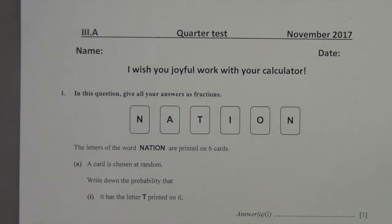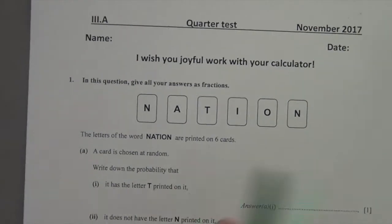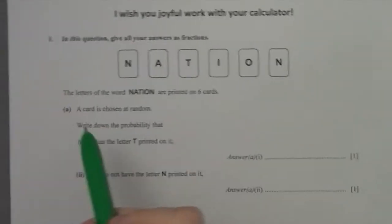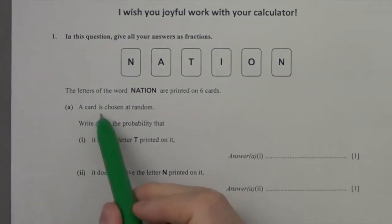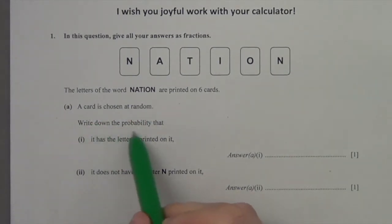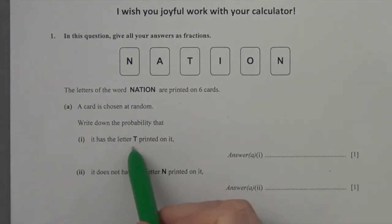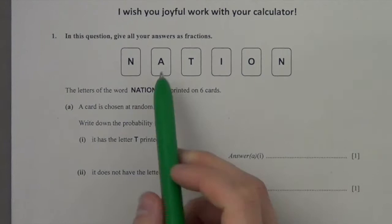We're going to do some probability and statistics exam-style questions. First one: a card is chosen at random. Write down the probability that it has the letter T printed on it.